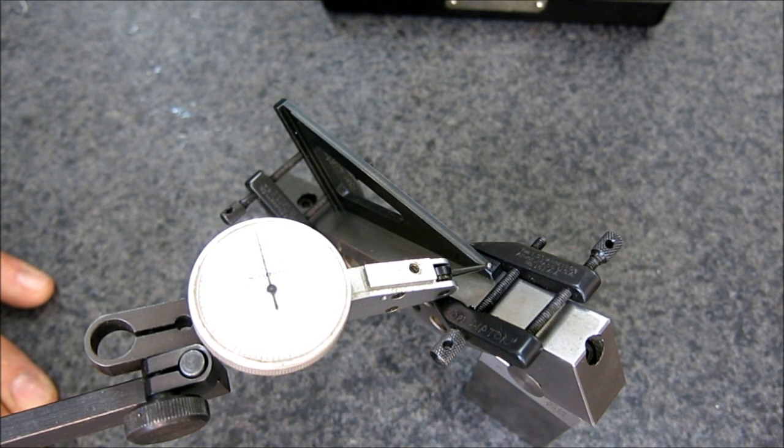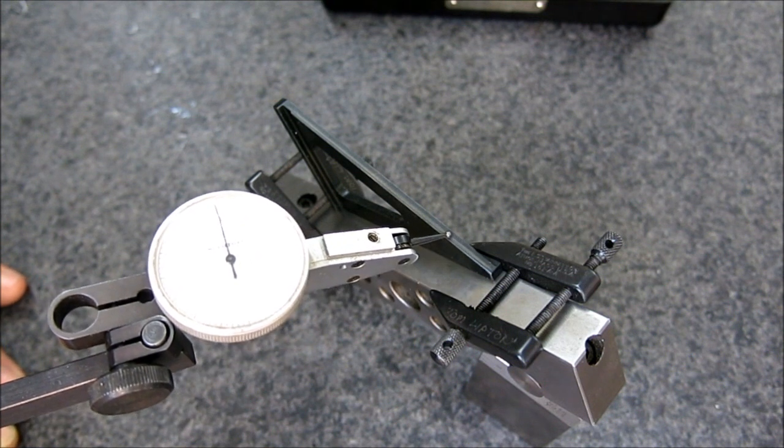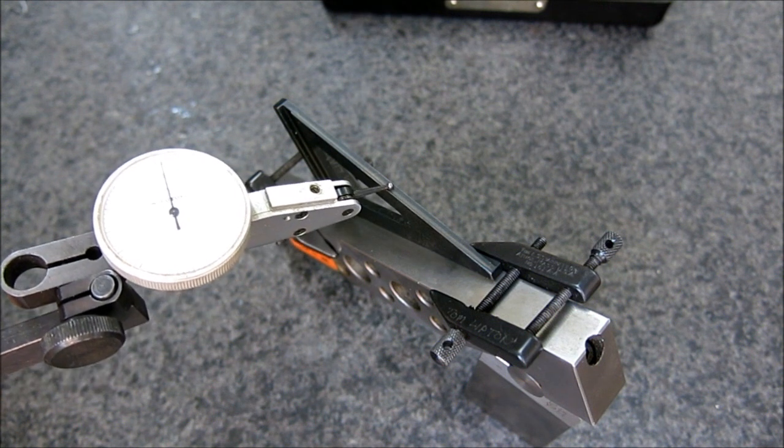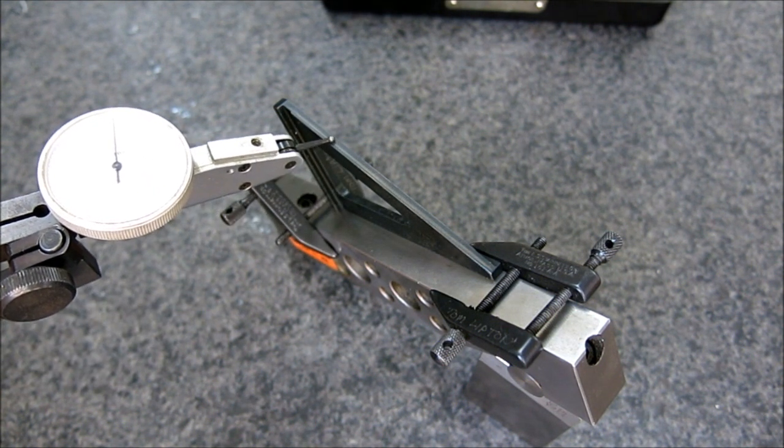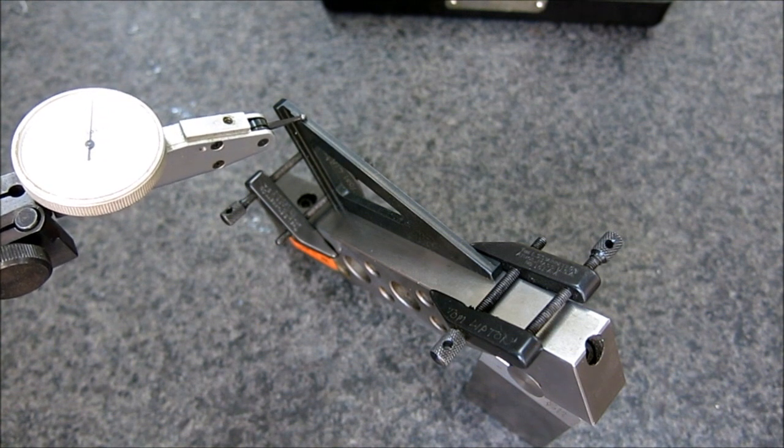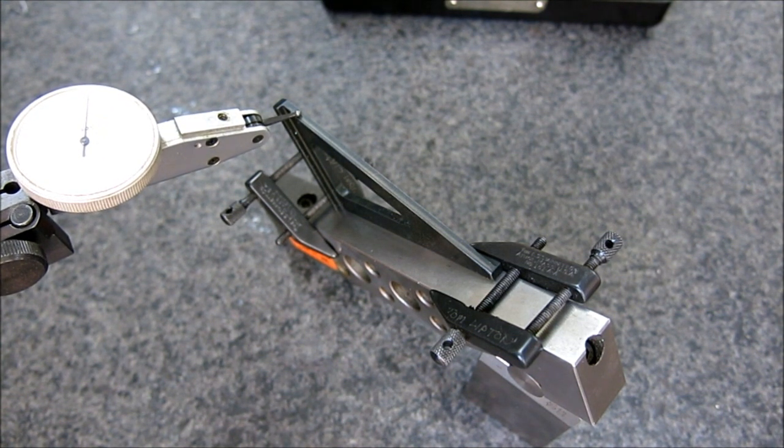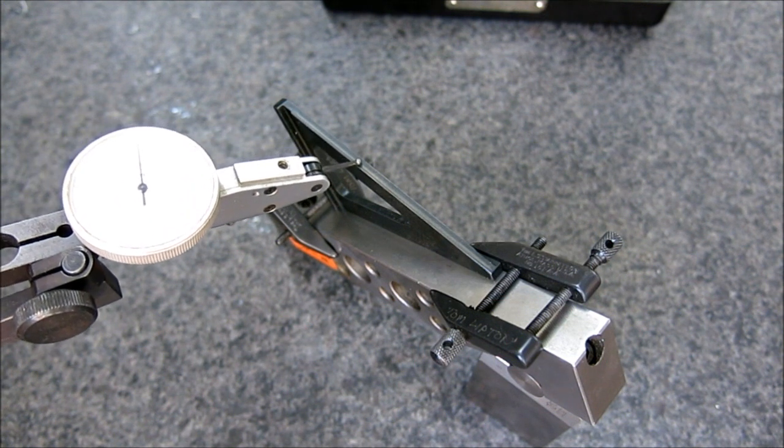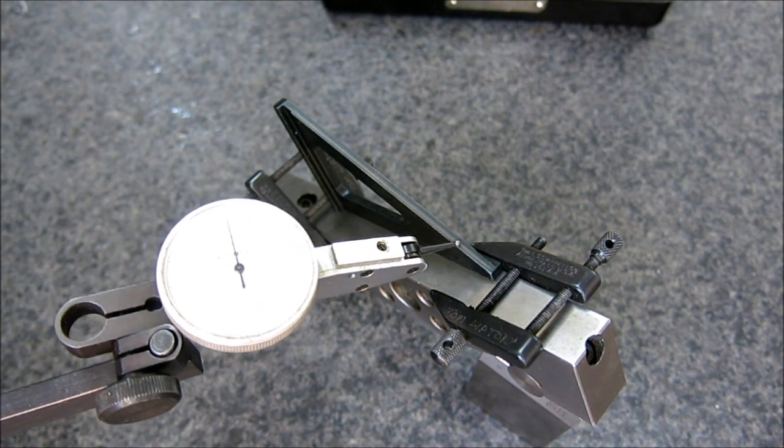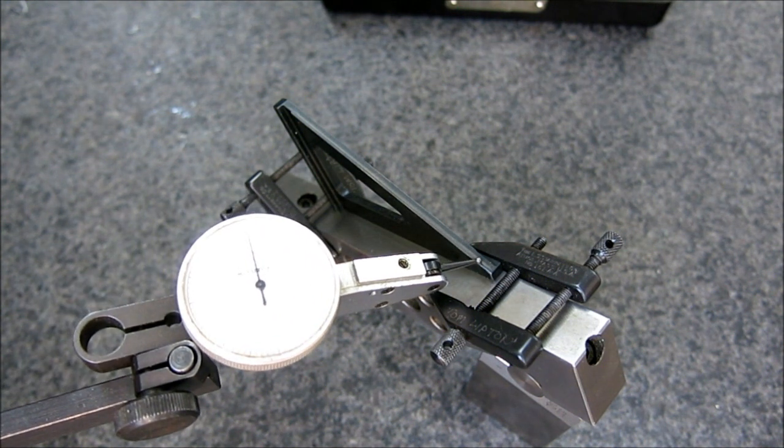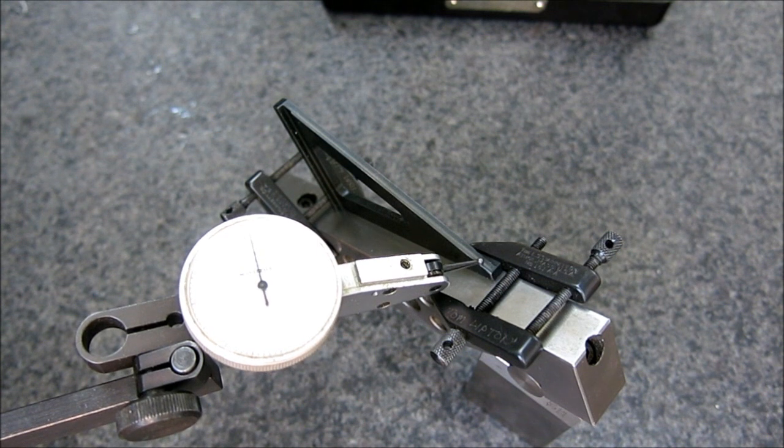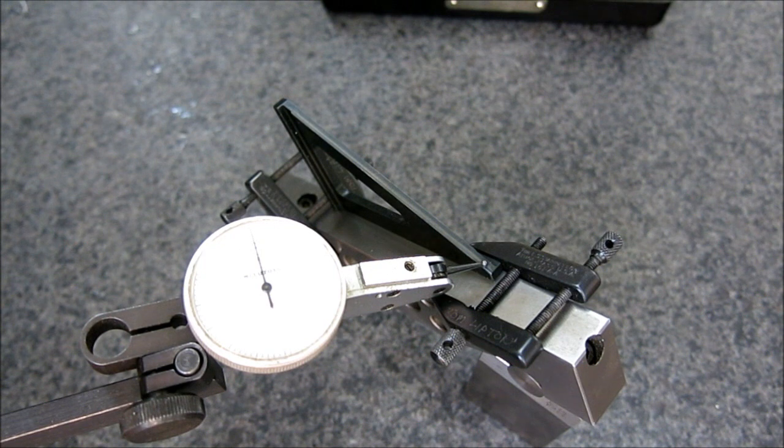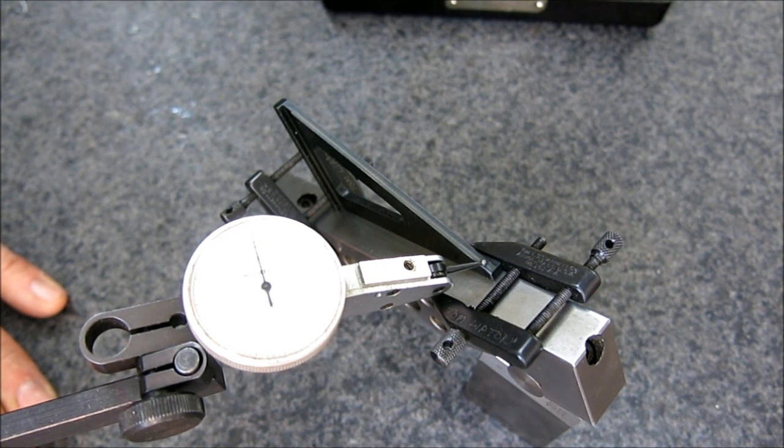I'm tapping on the height gauge with my finger just lightly to get things to settle. Okay, now we're going to sweep across there. Hopefully you guys can see this. Uh-oh, half thousandths. Let's do that again. Let's go back. So we're going to go back and see if we come back to our index. Always important. Oh, it looks like there's a little bump there or something.